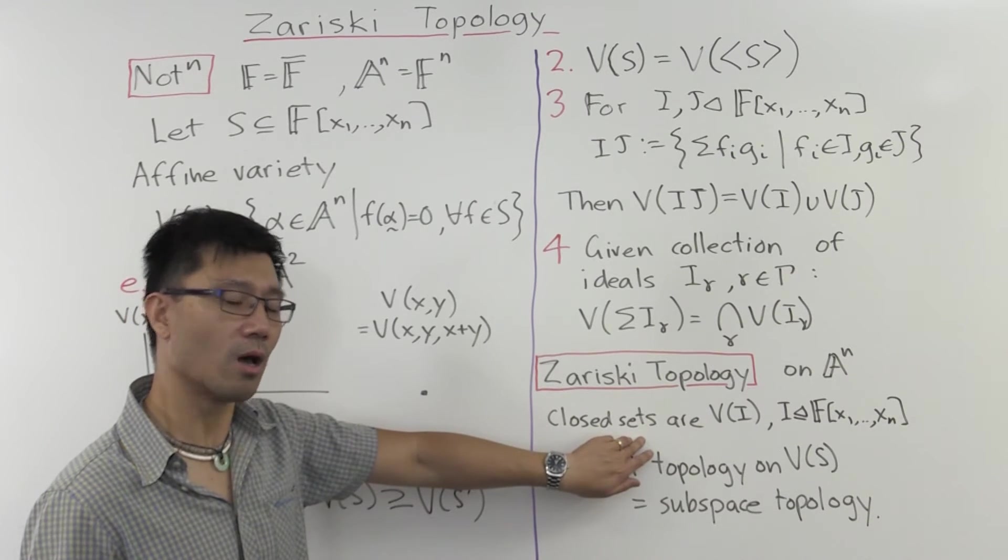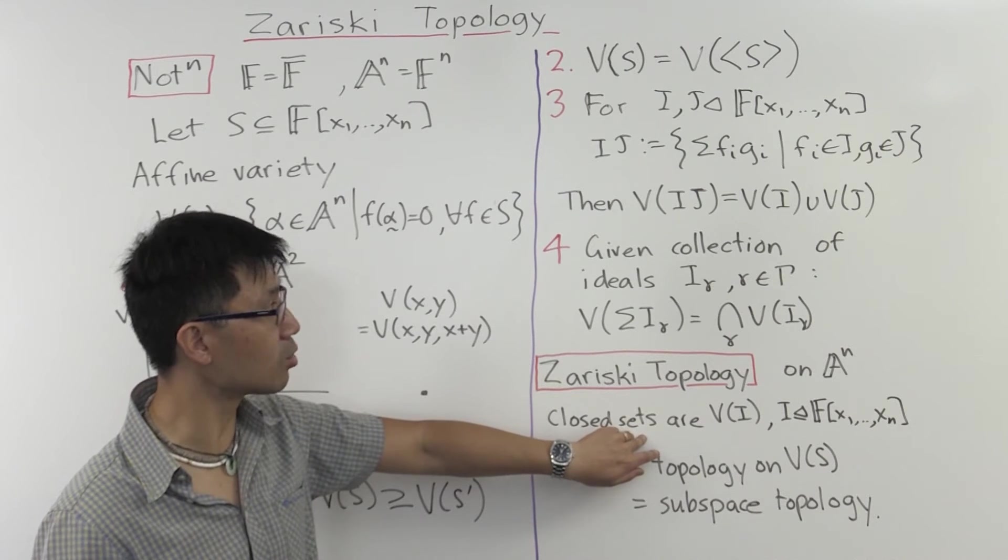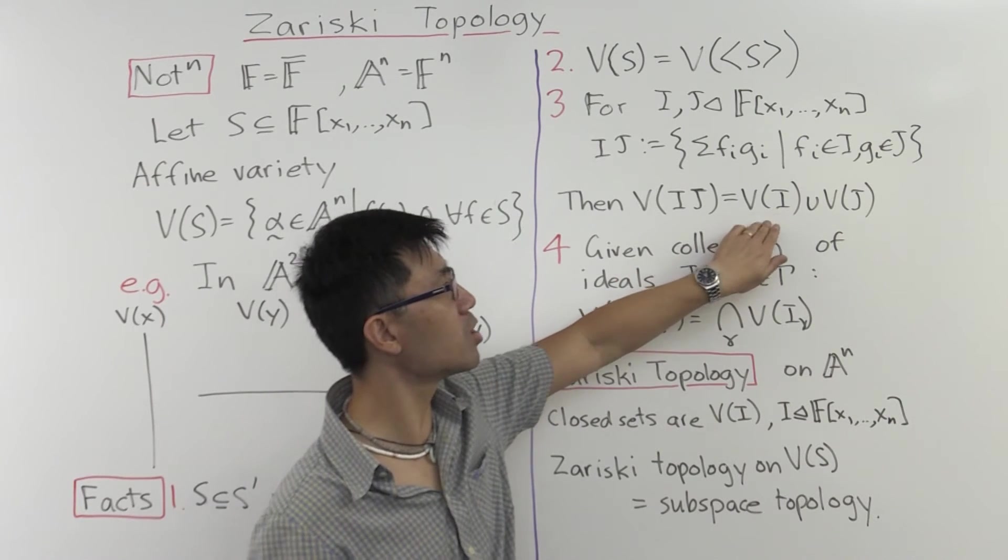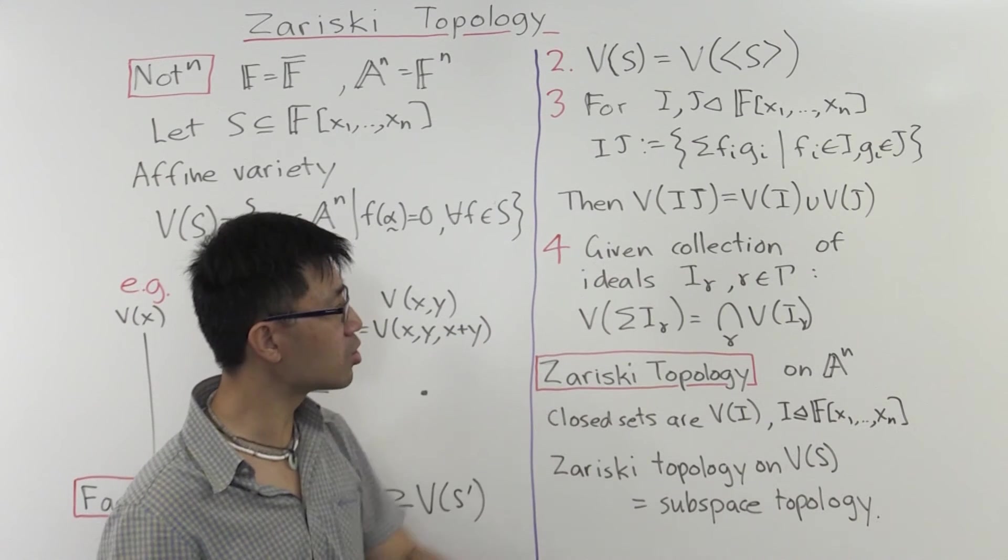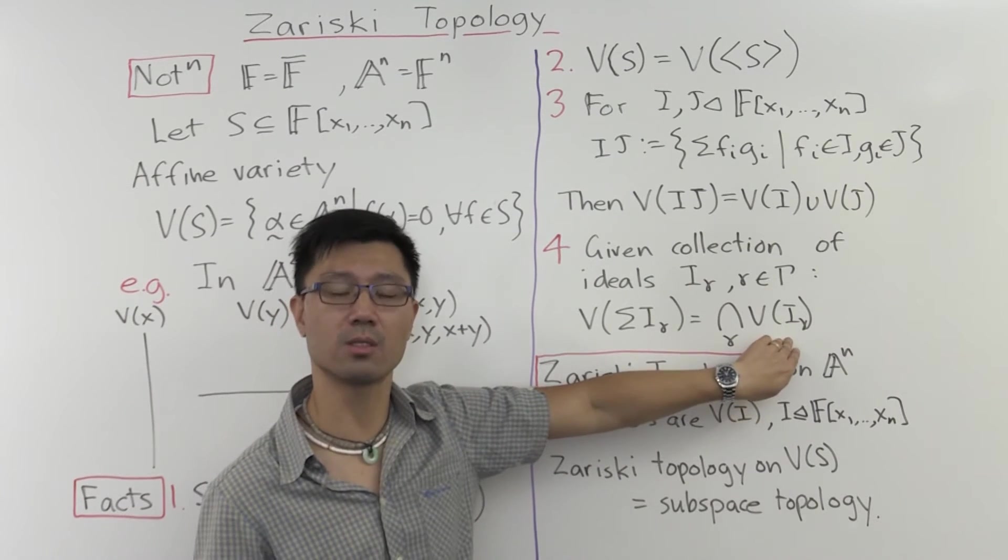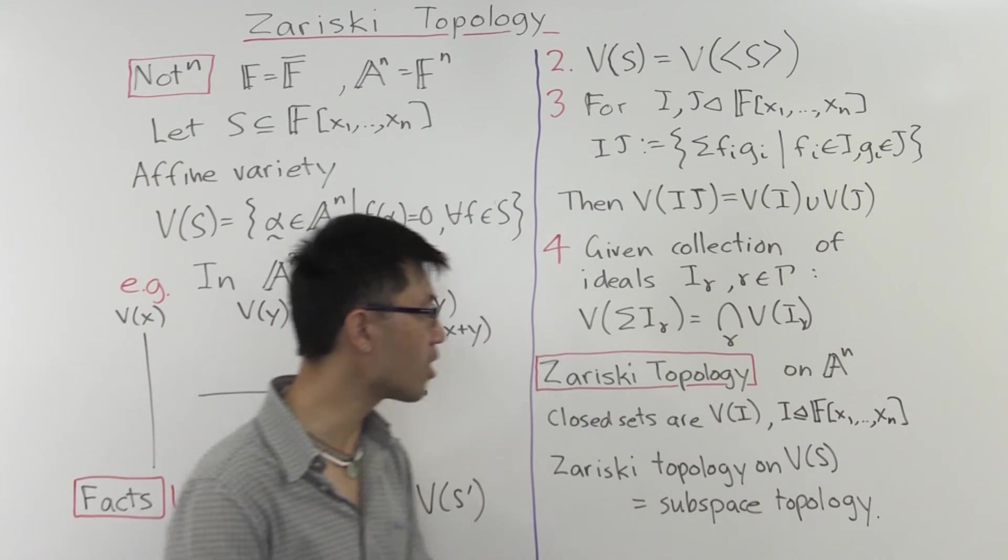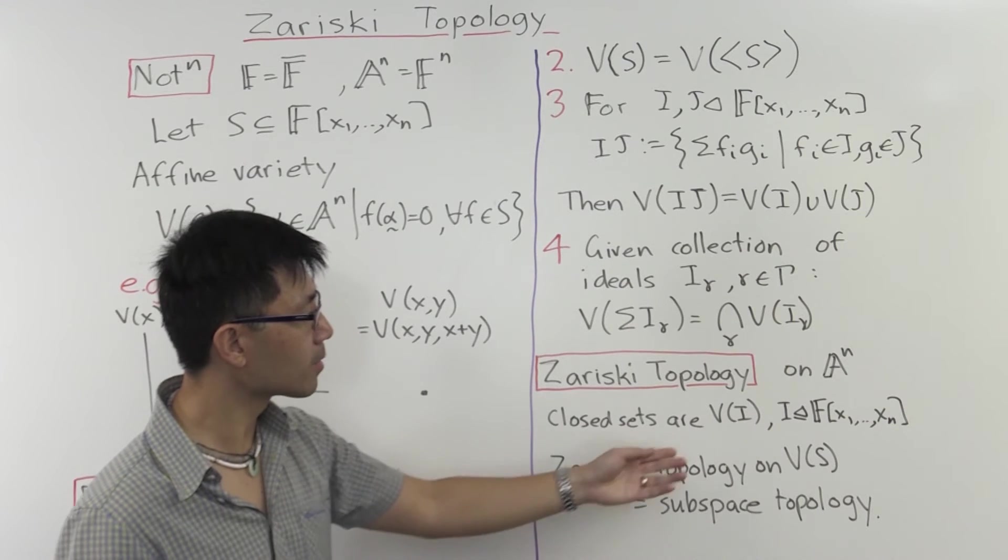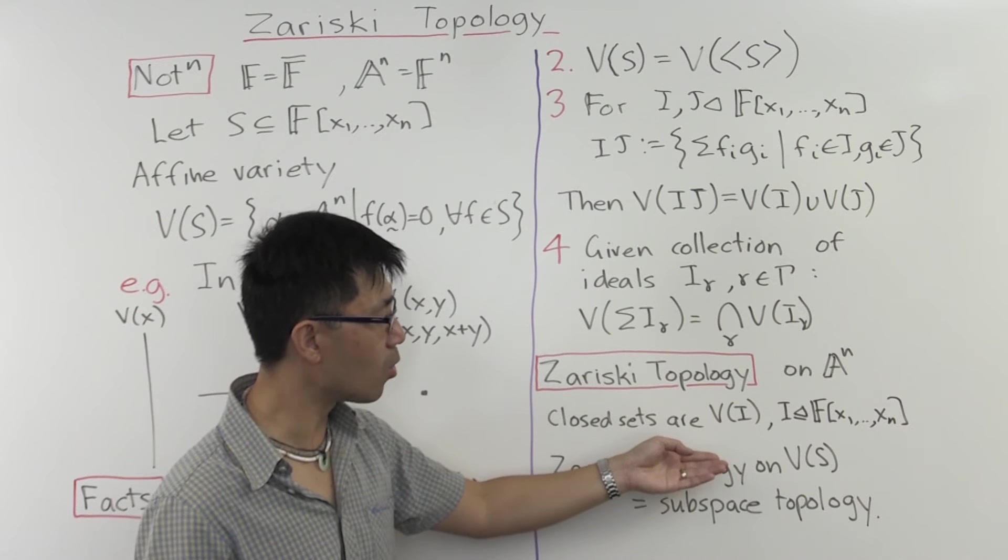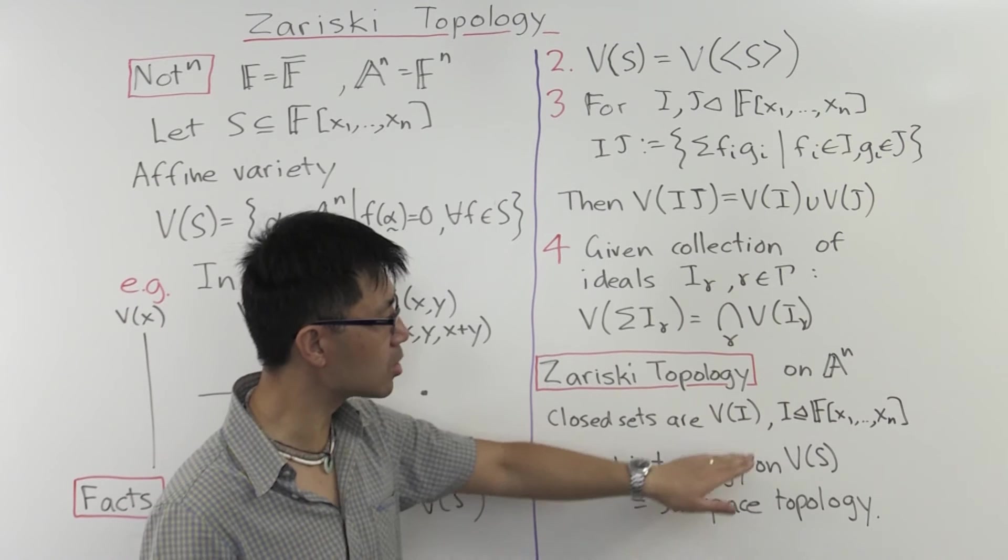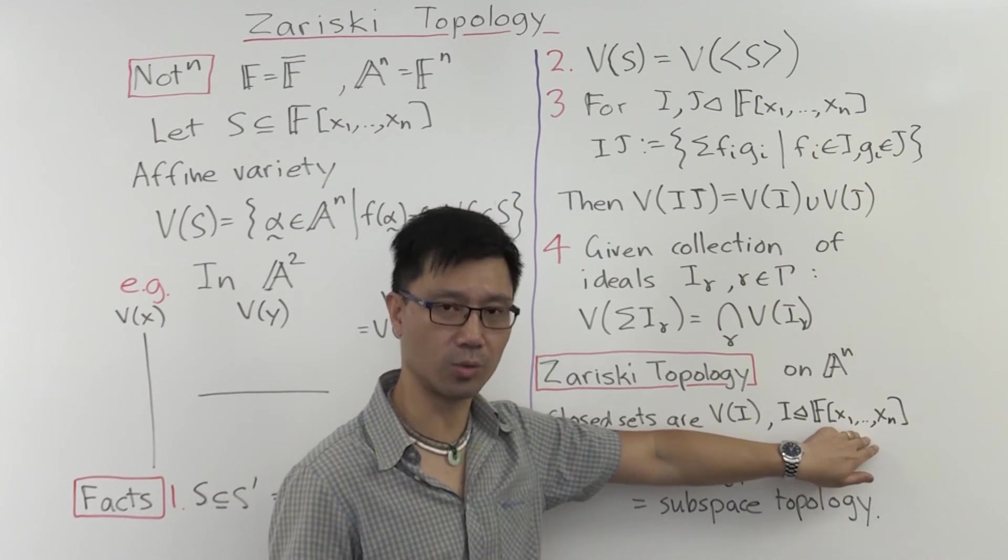So what types of things do you need to check to check that it's a topology? Well, you need to check that finite unions of closed sets are still closed. And we see this here. The union of two closed sets is equal to this variety here, so it's closed. You need to check that arbitrary intersections of closed sets are still closed. And that's what this shows you here. I guess the other thing that you should check is, well, the empty set and the whole set, are they also closed? And it's quite easy that if you pick the ideal to be either 0 or the whole polynomial ring, you'll get those two answers.